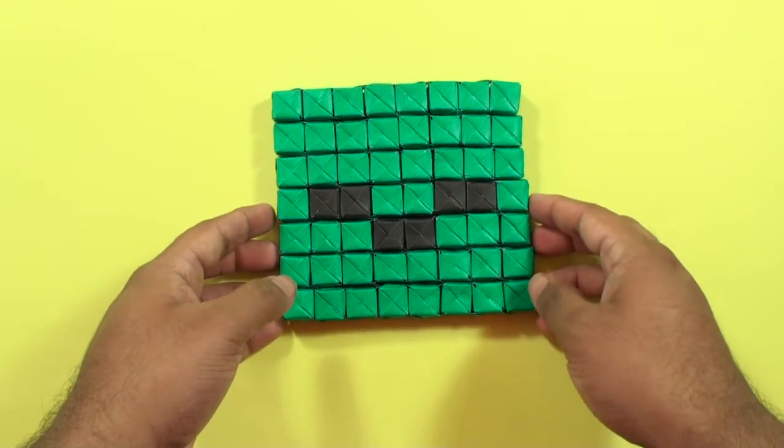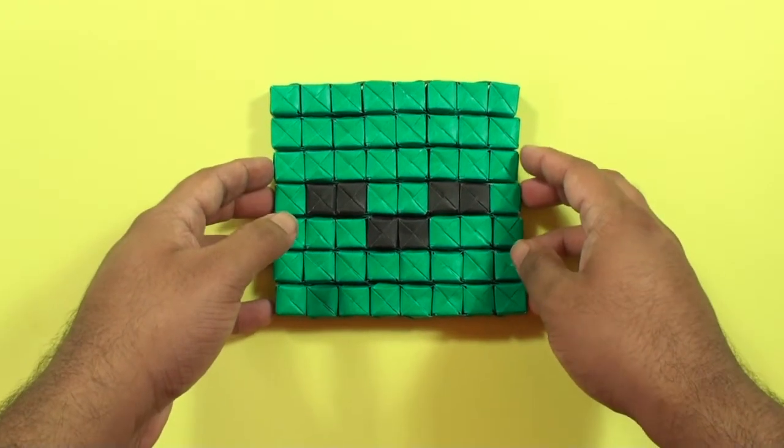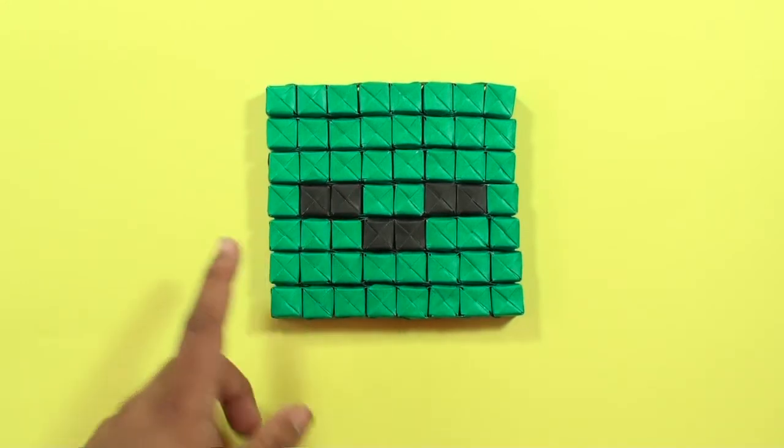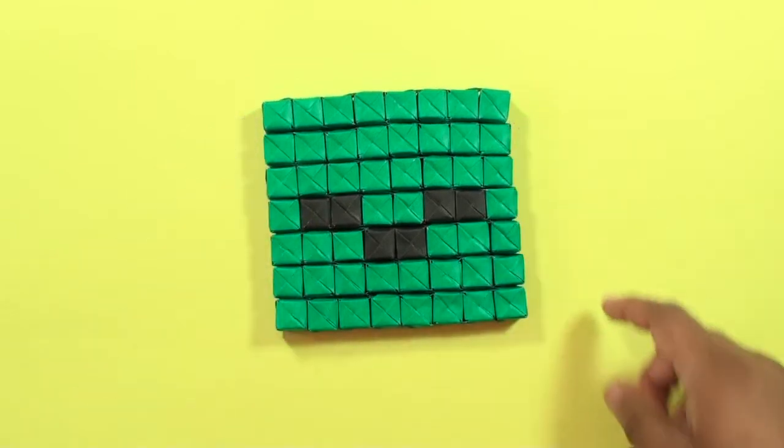To make this exact model here you're going to need a total of 56 units and I've used six black units and 50 green units.